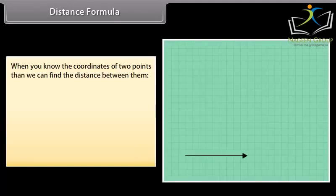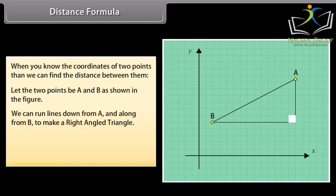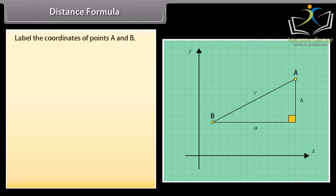Distance formula. When you know the coordinates of two points, then we can find the distance between them. Let the two points be A and B as shown in the figure. We can run lines down from A and along from B to make a right angled triangle. Now using Pythagoras theorem, we get A square plus B square is equal to C square.